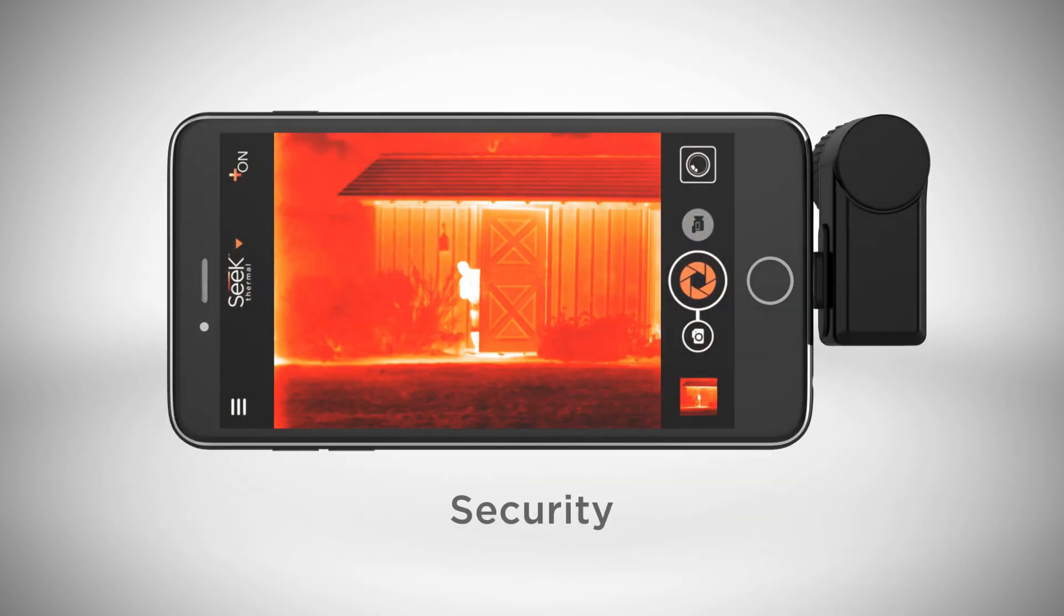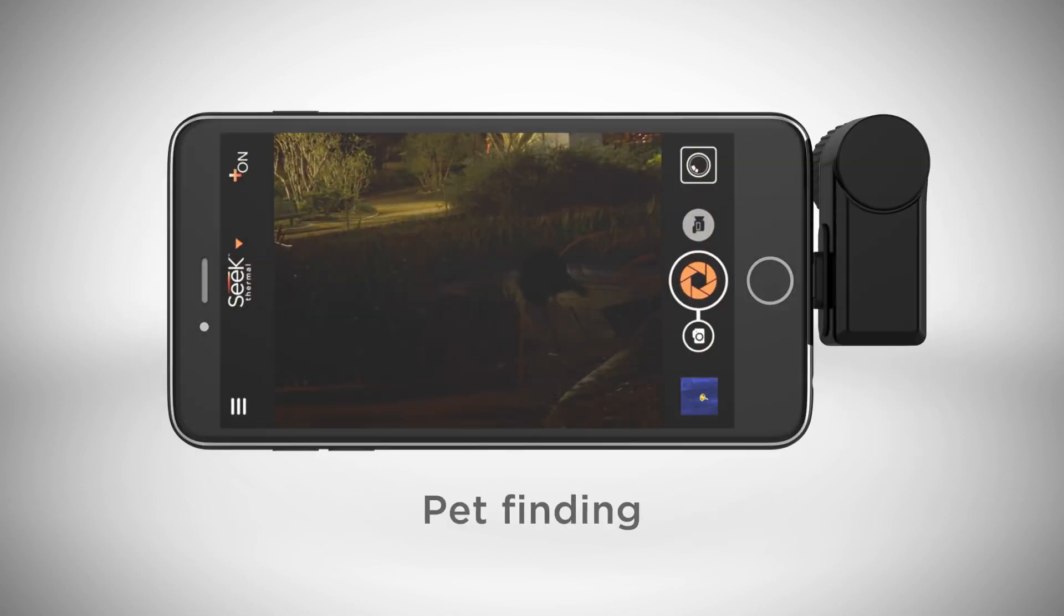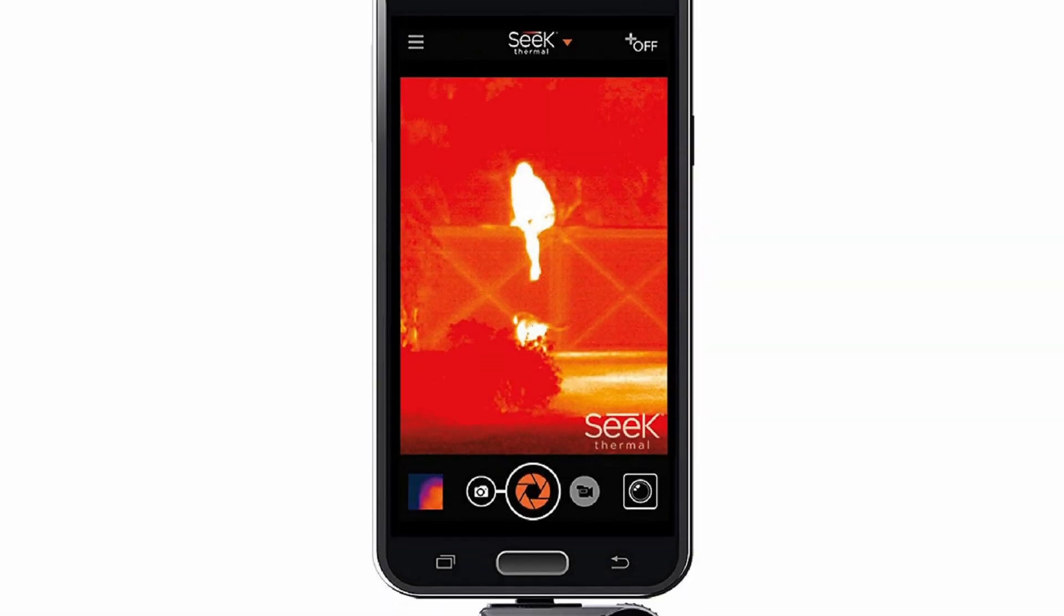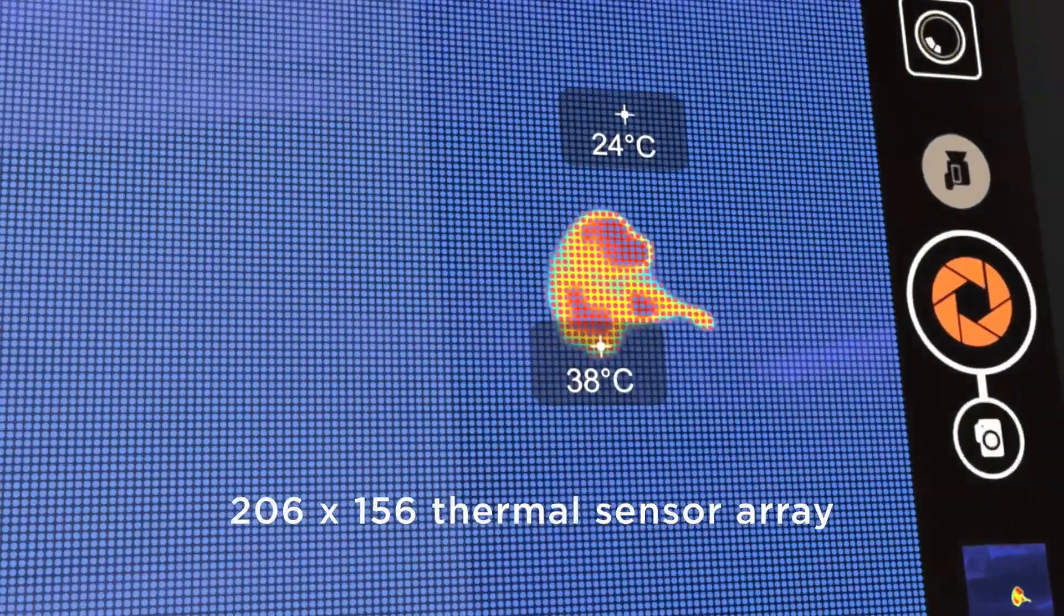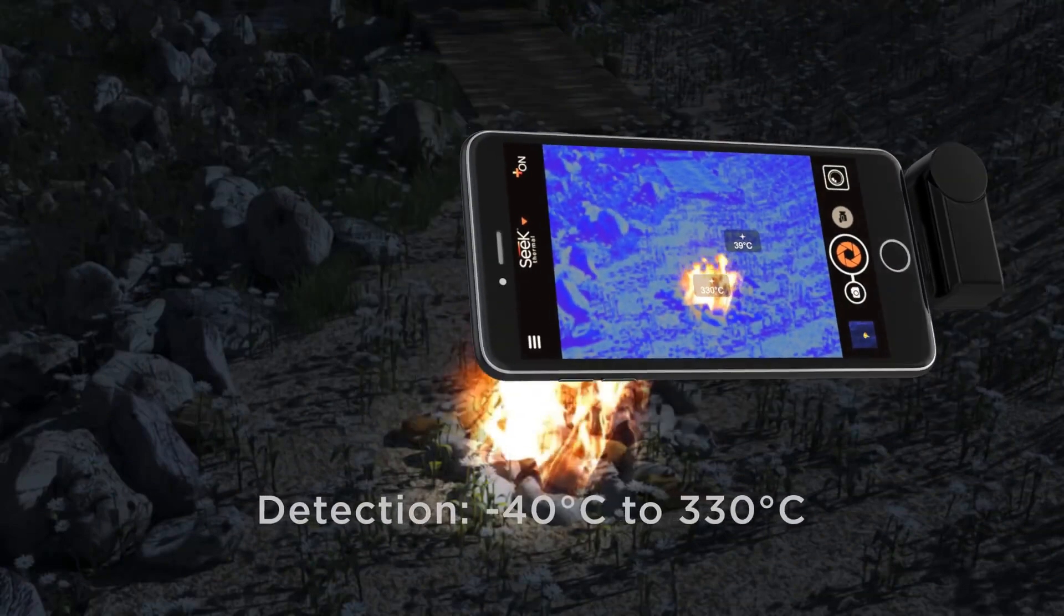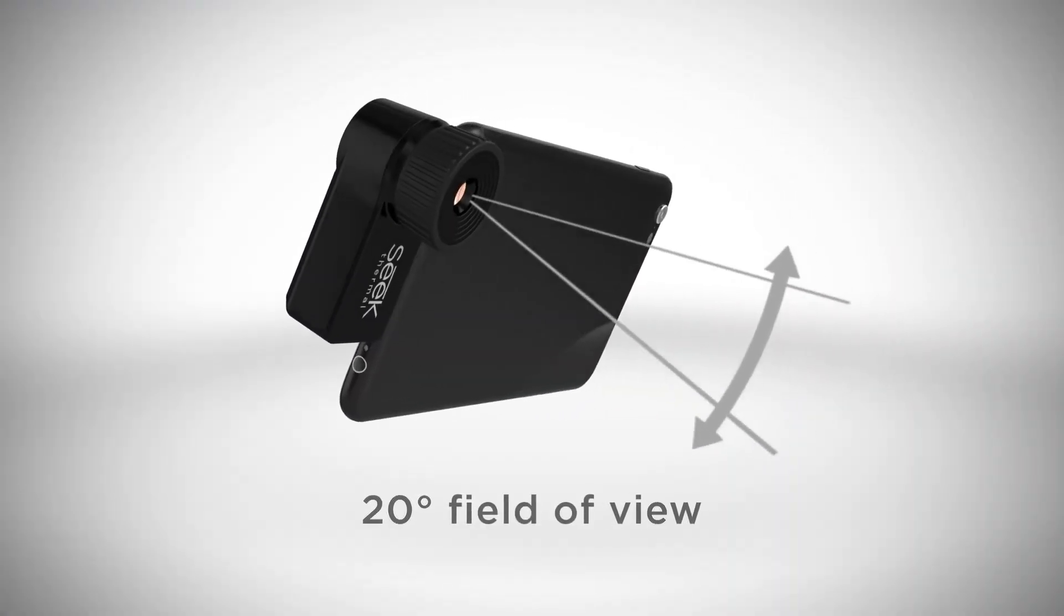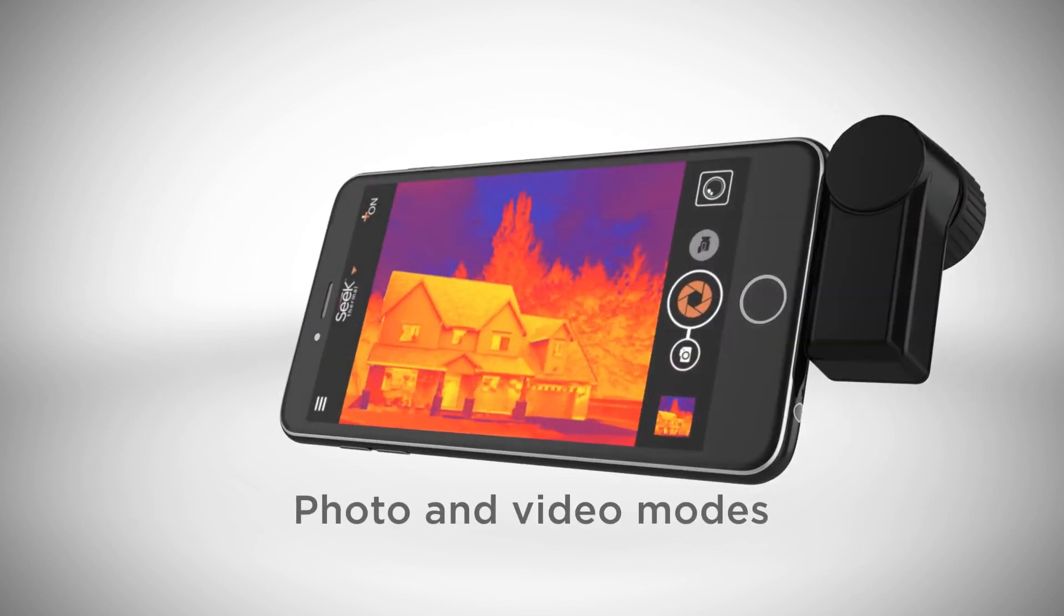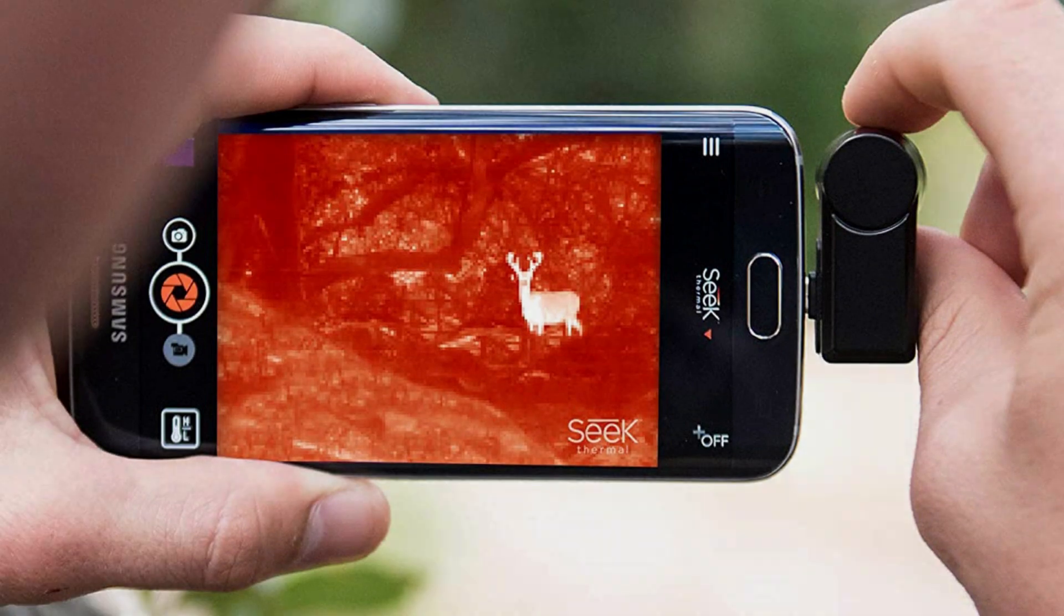Key features: 206 x 156 thermal sensor, detection range from minus 40°F to 626°F, focusable lens, 9 color palettes, 20° field of view. Thermal camera resolution: The Seek Thermal Compact XR comes with a thermal camera resolution of 206 x 156 pixels. Although less than the Compact Pro, its specs are quite lovely for thermal cameras.